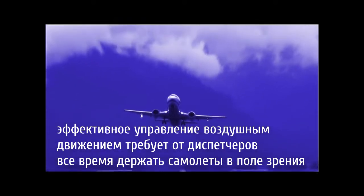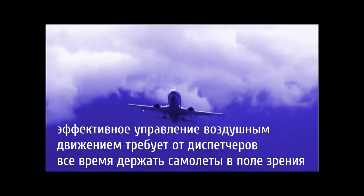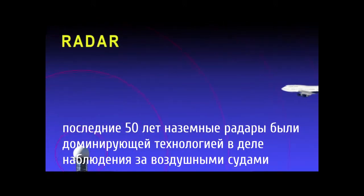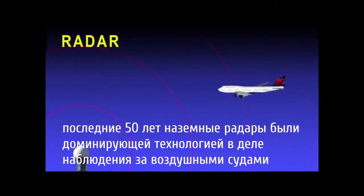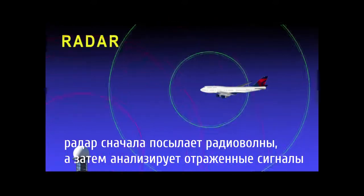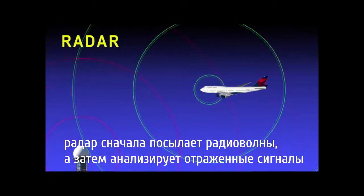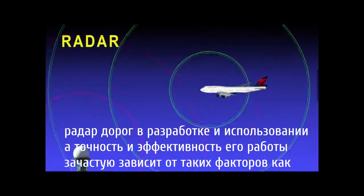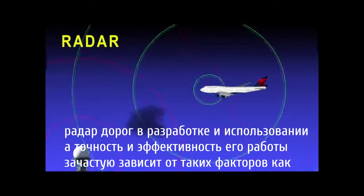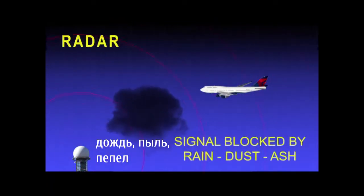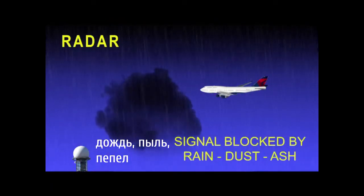Effective air traffic management requires that controllers always know where the aircraft are. For more than 50 years, radar has been the dominant air traffic control surveillance technology. Radar works by bouncing radio waves off of the aircraft and interpreting the return. Radars are expensive to build and maintain, and their accuracy and efficiency are sometimes affected by environmental factors such as rain and dust.